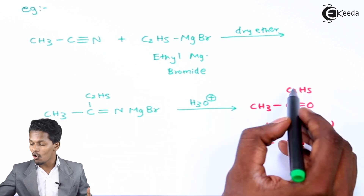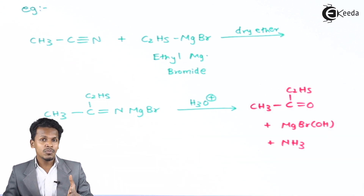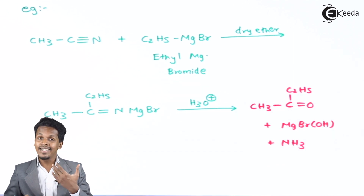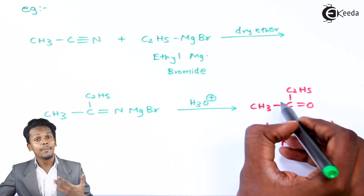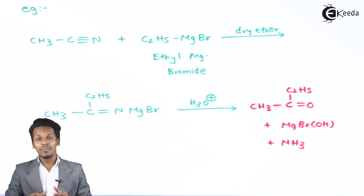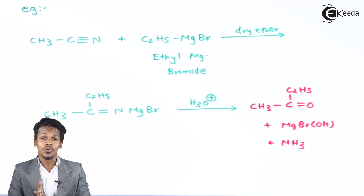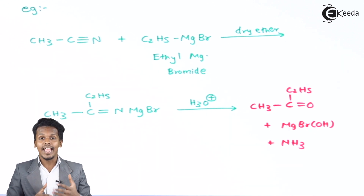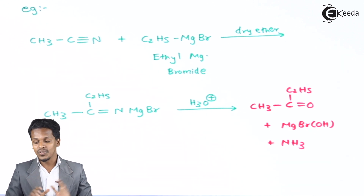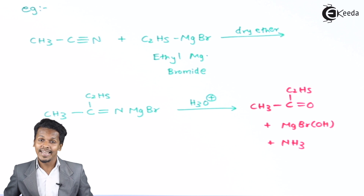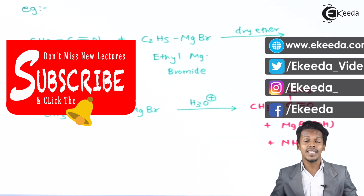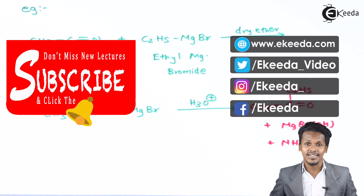The ketone obtained is known as ethyl methyl ketone in common nomenclature, or butanone by IUPAC name. In summary, we can prepare aldehydes and ketones using Grignard reagent: to prepare an aldehyde use HCN, and to prepare a ketone use an alkyl cyanide. Thank you for watching; I hope you understood this video clearly, and don't forget to subscribe to the channel.